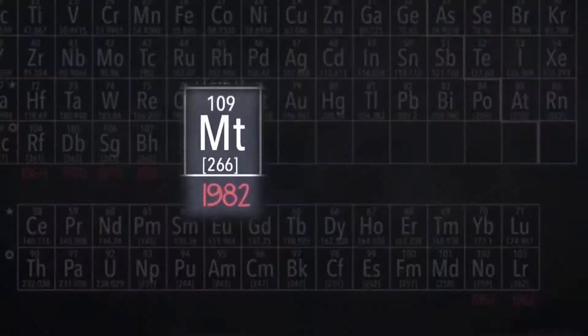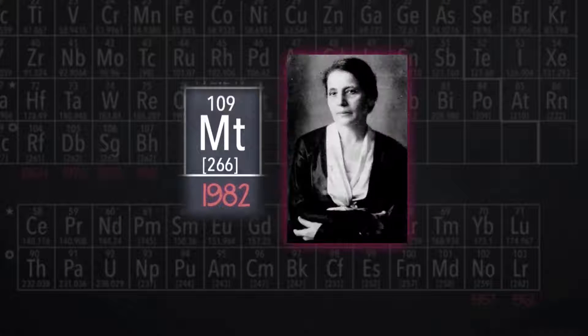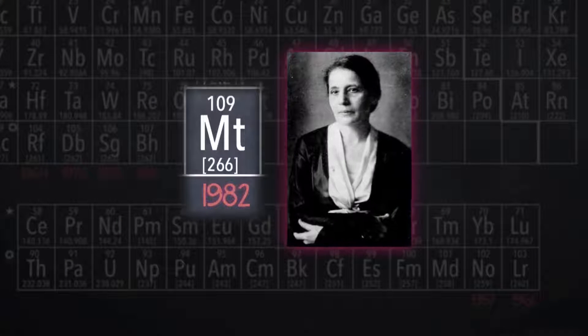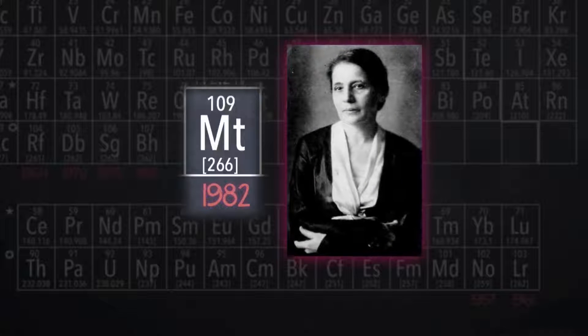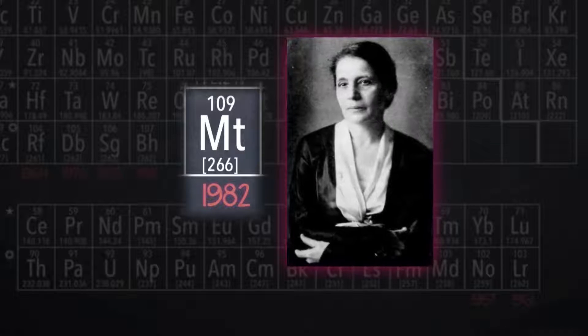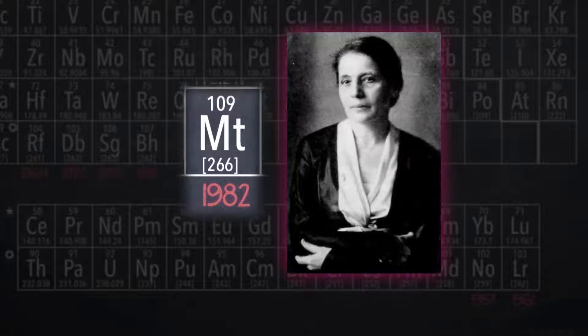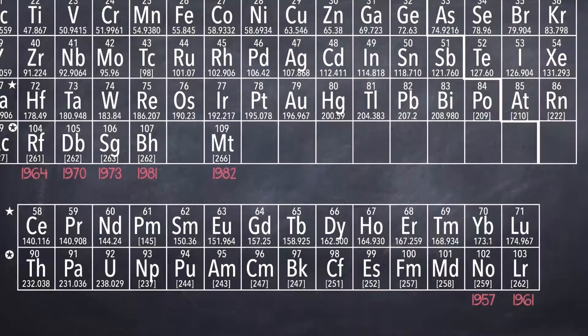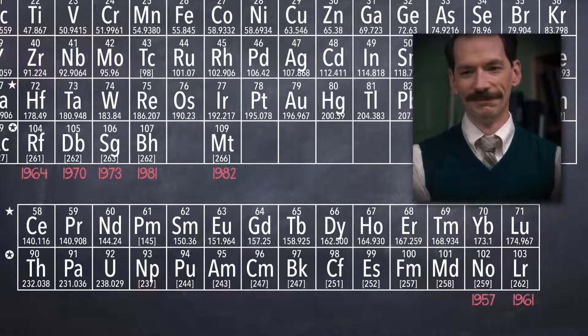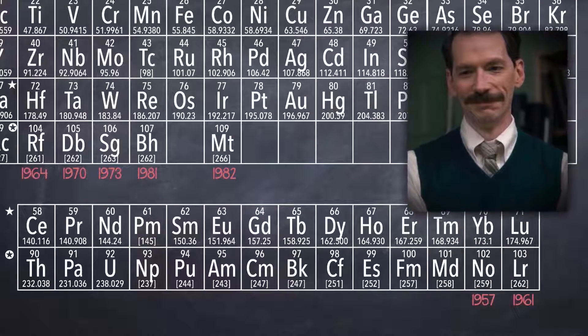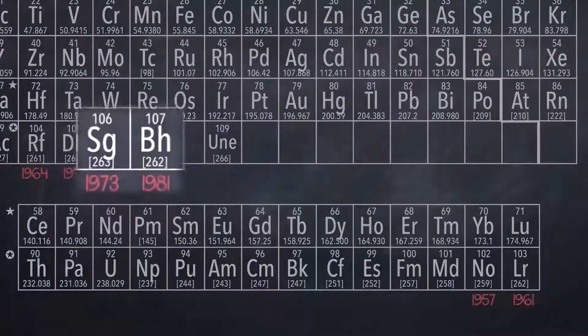Element 109 is named Meitnerium, in tribute to Lise Meitner, who most would argue was unjustly excluded from sharing the 1944 Nobel Prize in Chemistry for the discovery of the fission of heavy atomic nuclei. So if Mr. Clark had the newest periodic table available to him, it might have been there, most likely with the placeholder designation of Unilunium.